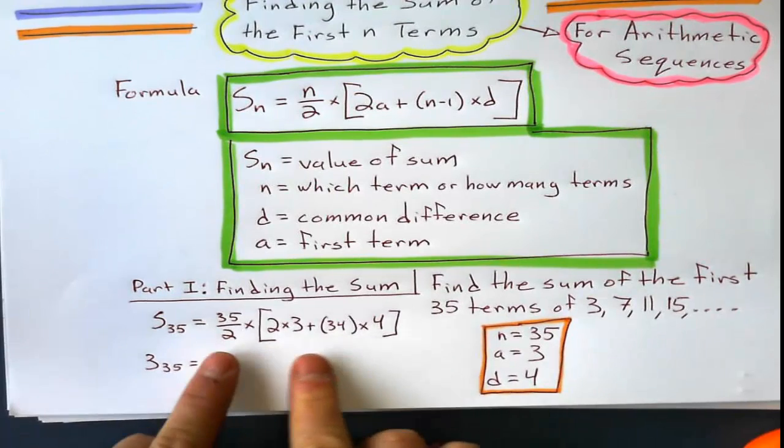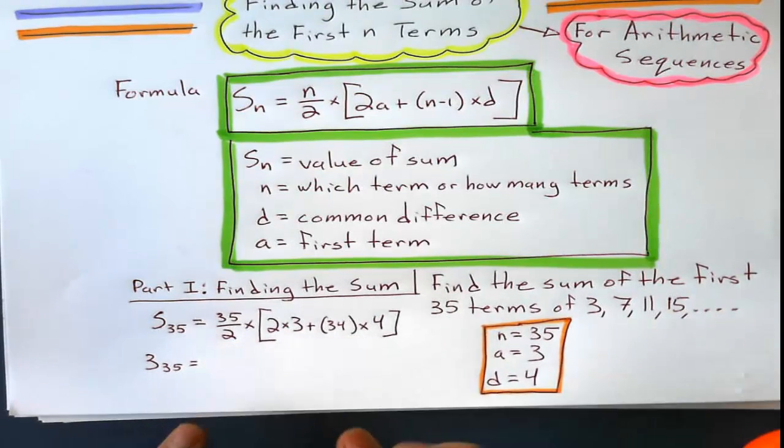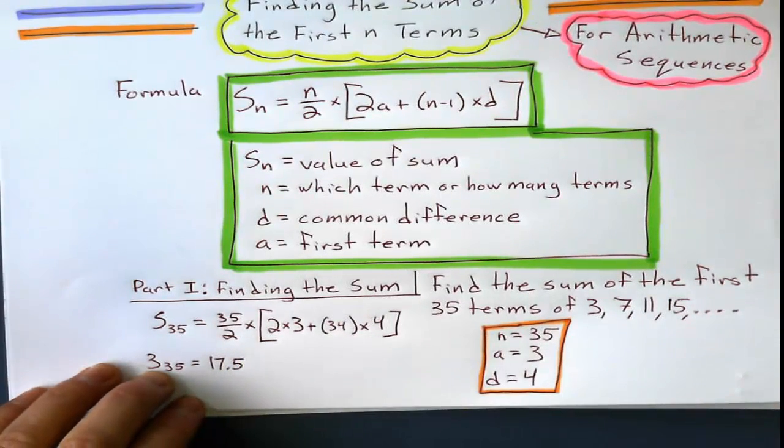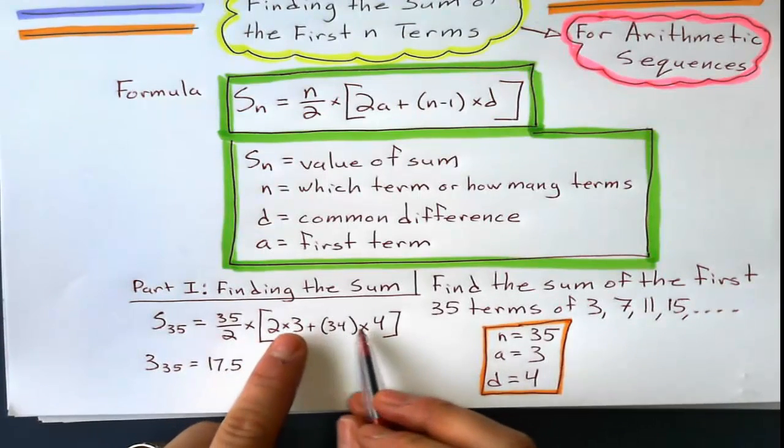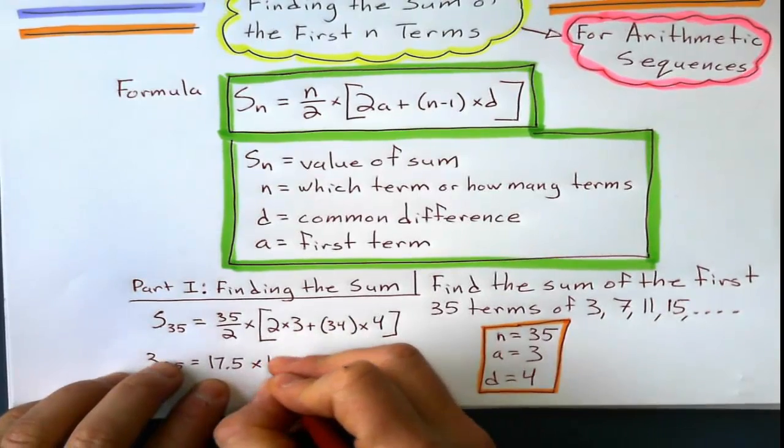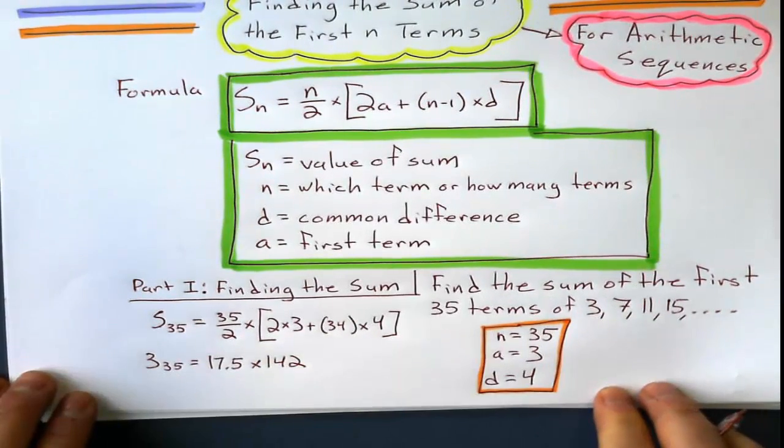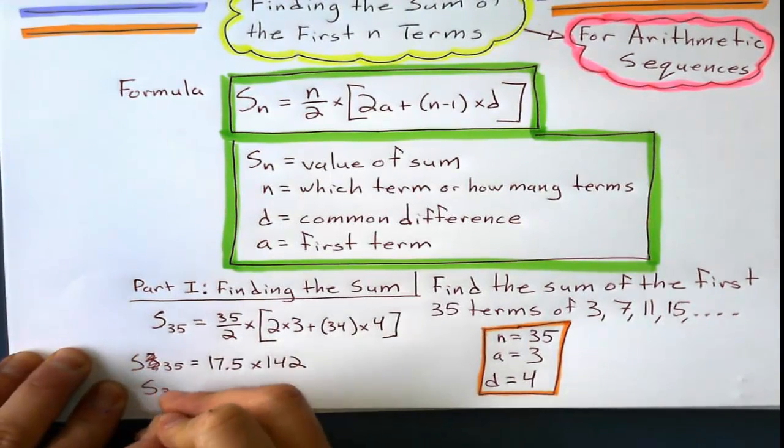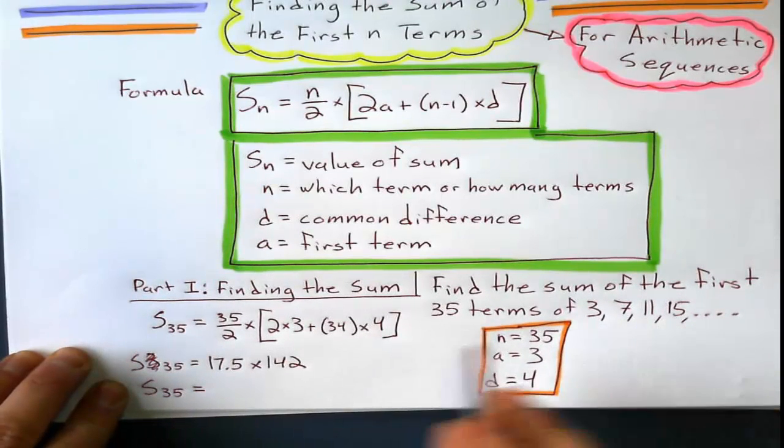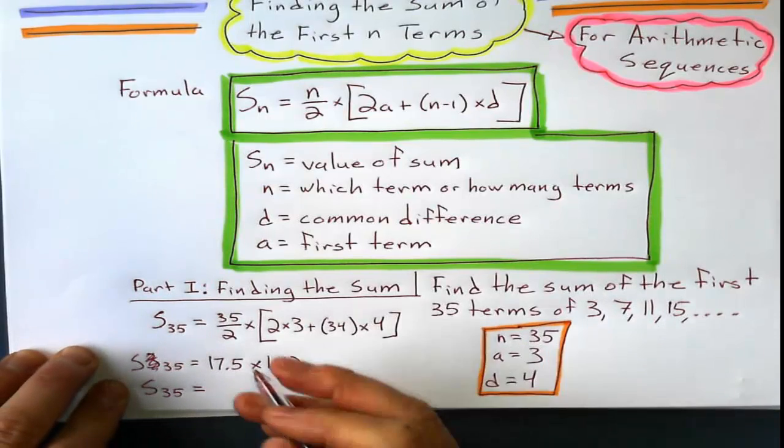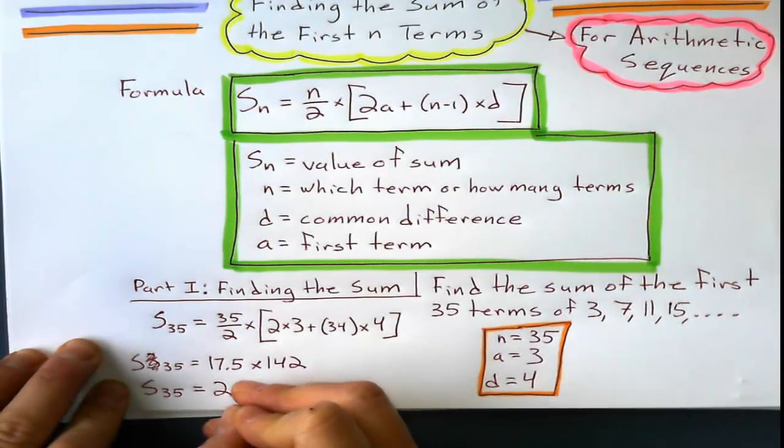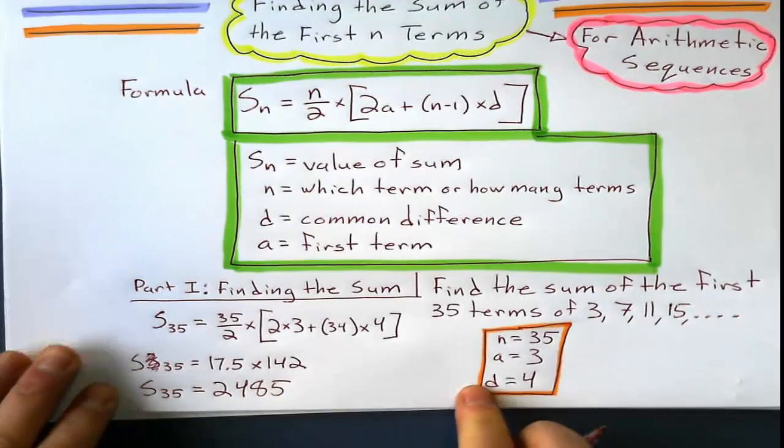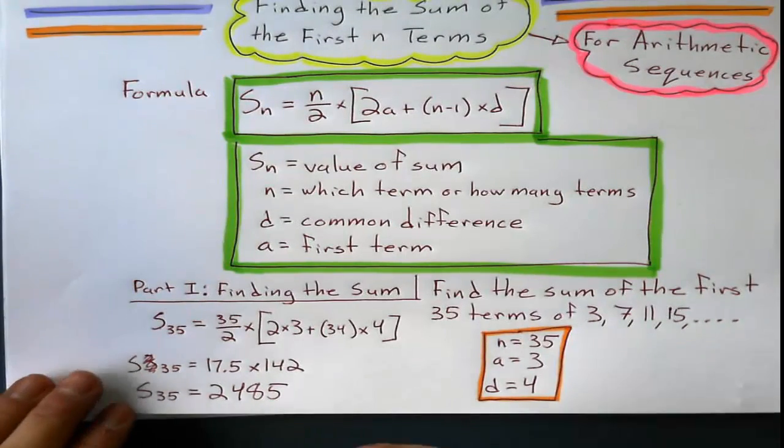And so I simplify these bits here, you could enter all this on the calculator, but 35 divided by 2 is 17.5, and when I simplify all of this on the calculator inside the brackets here, I do get 142. I just did a little shortcut for you. So the sum of the first 35 terms of this arithmetic sequence is 17.5 times 142, which I think gives me 2,485. That checks.